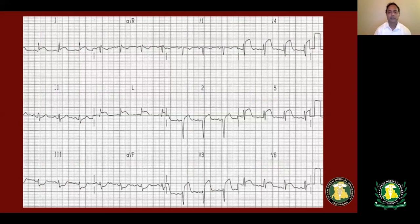Another EKG showing ST elevation myocardial infarction: this patient has ST elevation of two to three millimeters in leads V2, V3, V4, V5, and V6, and has reciprocal ST depression — one of the criteria to diagnose ST elevation myocardial infarction — which is present in leads III and AVF. This patient is having an acute anterior-lateral wall myocardial infarction, most likely involving the mid-LAD.